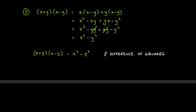x times x gives x², x times −y gives −xy, y times x gives yx, y times −y gives −y². Since yx equals xy but one is negative and one is positive, they cancel out to zero. So all that's left is x² − y². That's why the product (x + y)(x − y) = x² − y², called the difference of squares.